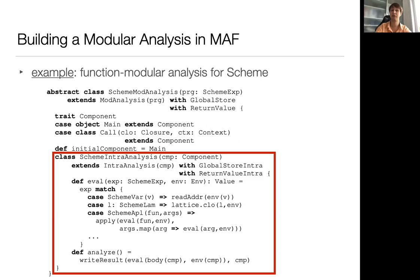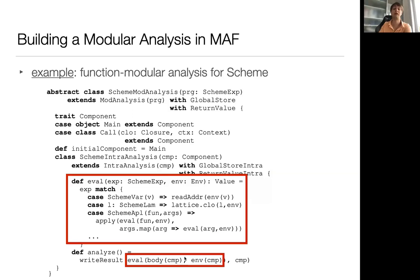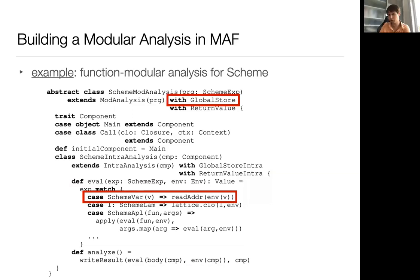Next, we need to define an intra-component analysis for our components. We do this by defining an inner class SchemeIntraAnalysis, which should provide a single method to analyze a given component. The nice thing about implementing this method is that it's relatively easy. Since components are functions, we can just analyze them using a very simple intraprocedural analysis. In this case, that boils down to doing a big step recursive eval over the function's body.